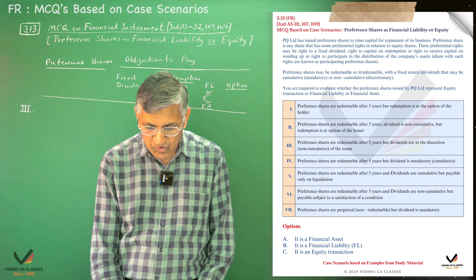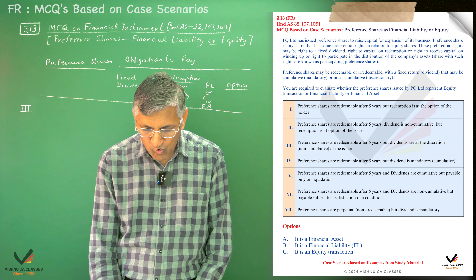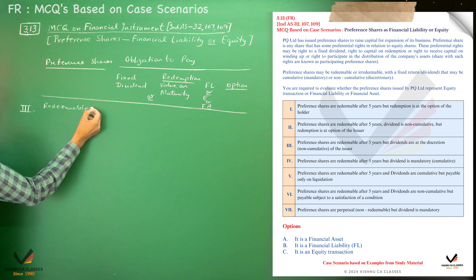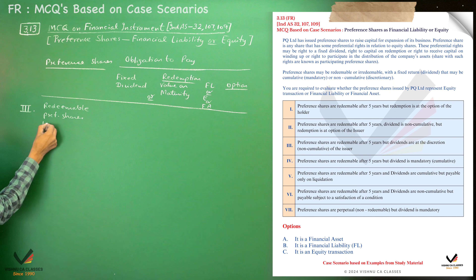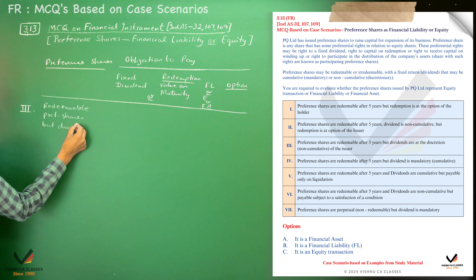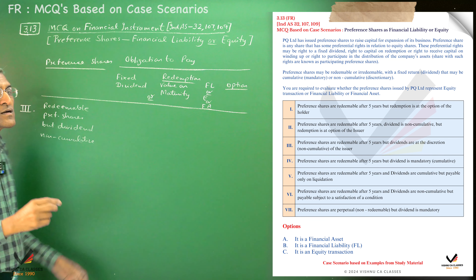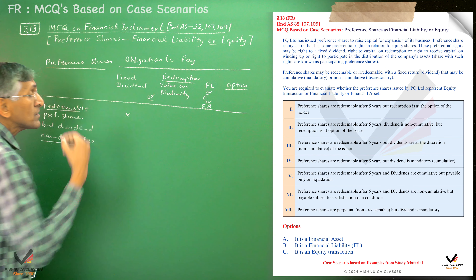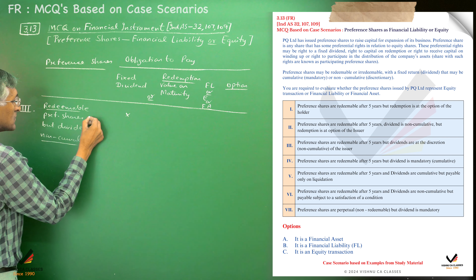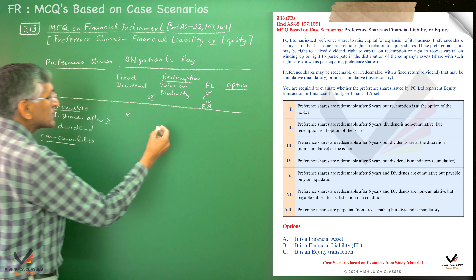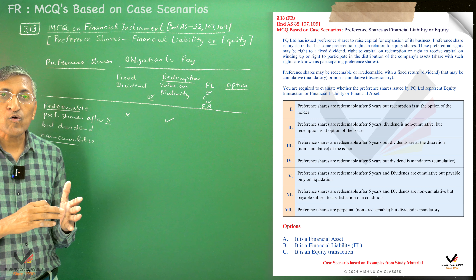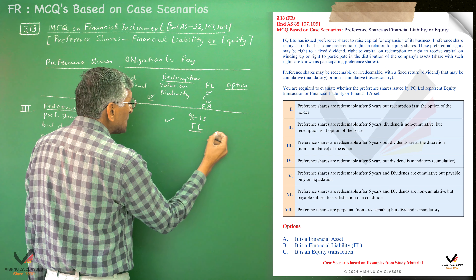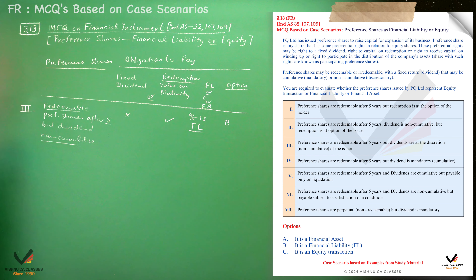Case 3: Preference shares are redeemable after five years, but dividend is at the discretion of the issuer — non-cumulative. Since the shares are redeemable after five years, there is an obligation to pay the redemption value on maturity. Therefore, it is a financial liability. The correct option is B.